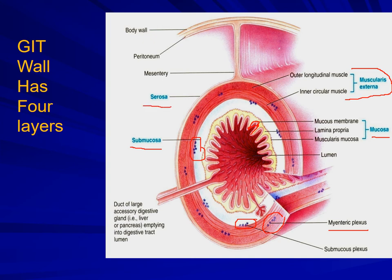The outermost layer is called serosa. It is made up of connective tissue and helps in attachment of the gut to the surrounding structures.